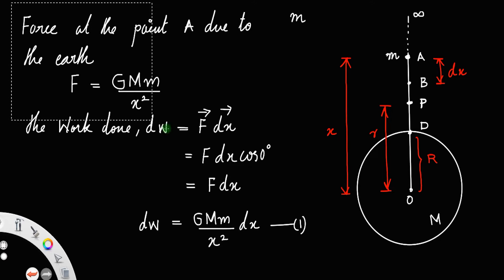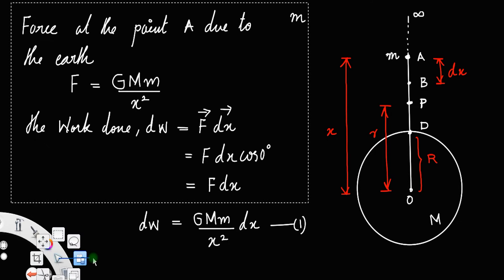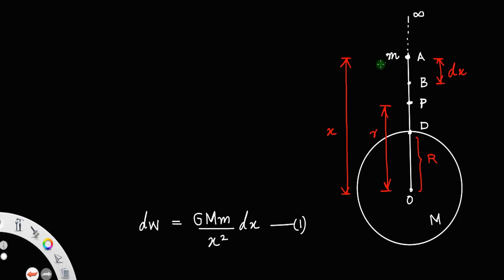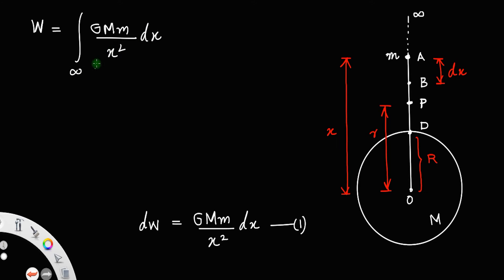In order to get the total work, we integrate from infinity to the point r, because x varies from infinity to r. We have to find the gravitational potential energy at P, so the total work W is equal to the integral of GMm/x² dx from infinity to r. Since G, M, and m are constants, this becomes GMm times the integral from infinity to r of x⁻² dx.